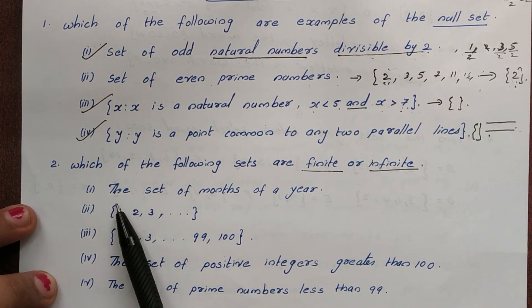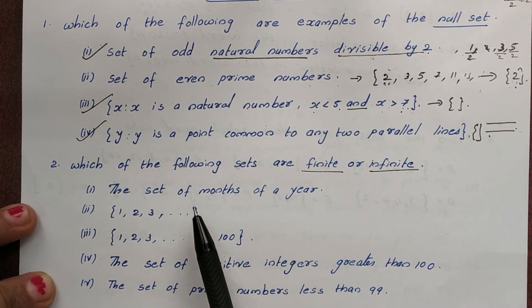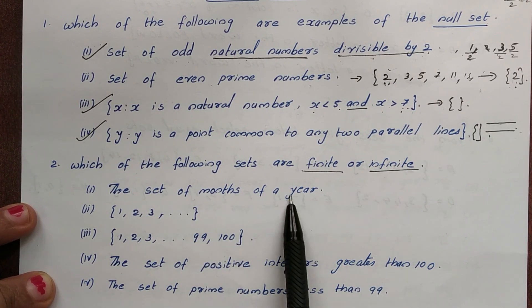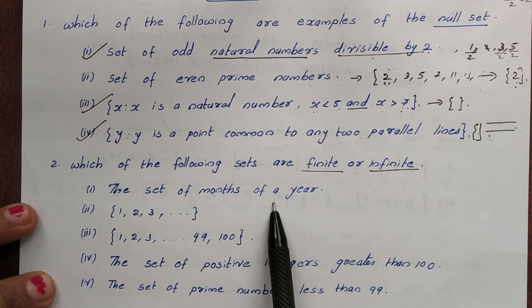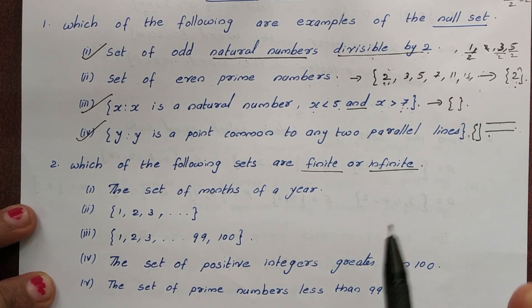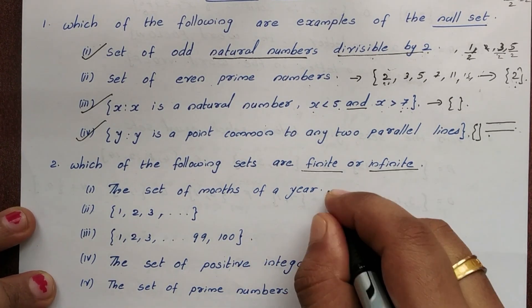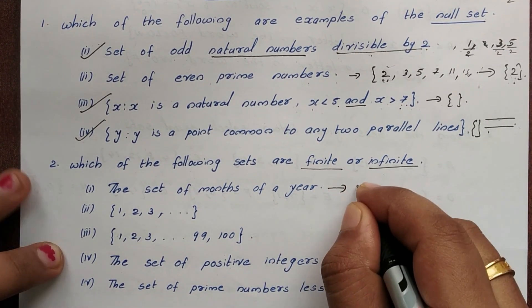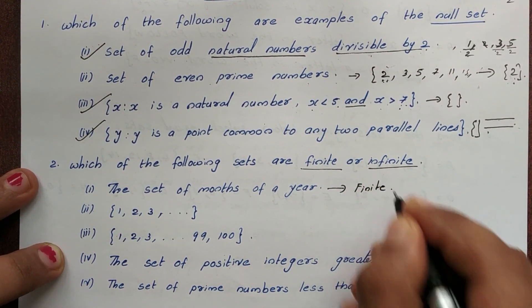First option: the set of months of a year. How many months are in a year? 12 months. So this is a finite set.